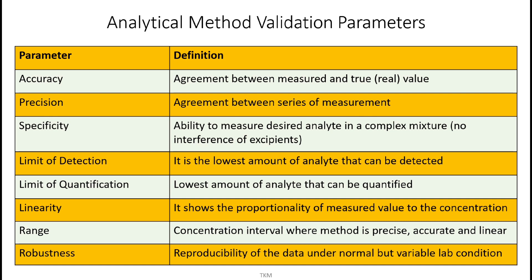Accuracy is the agreement between the measured and true value. Precision is the agreement between a series of measurements. Specificity is the ability to measure the desired analyte in a complex mixture. Limit of detection is the lowest amount of analyte that can be detected. Limit of quantification is the lowest amount of analyte that can be quantified. Linearity shows the proportionality of the measured value to the concentration range. Range is the concentration interval where the method is precise, accurate, and linear. Robustness is the reproducibility of data under normal but variable lab conditions.